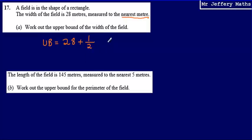So the upper bound is going to be 28 plus 1 divided by 2, or 28.5 metres.